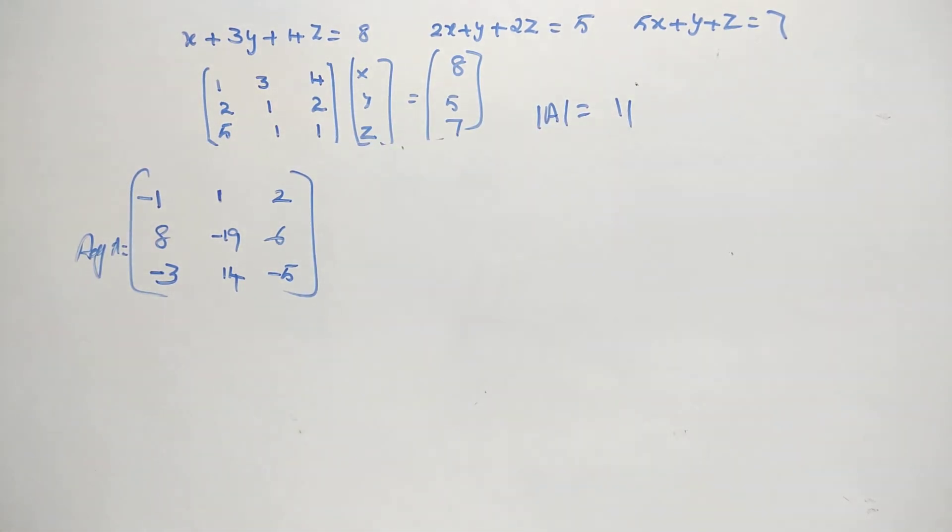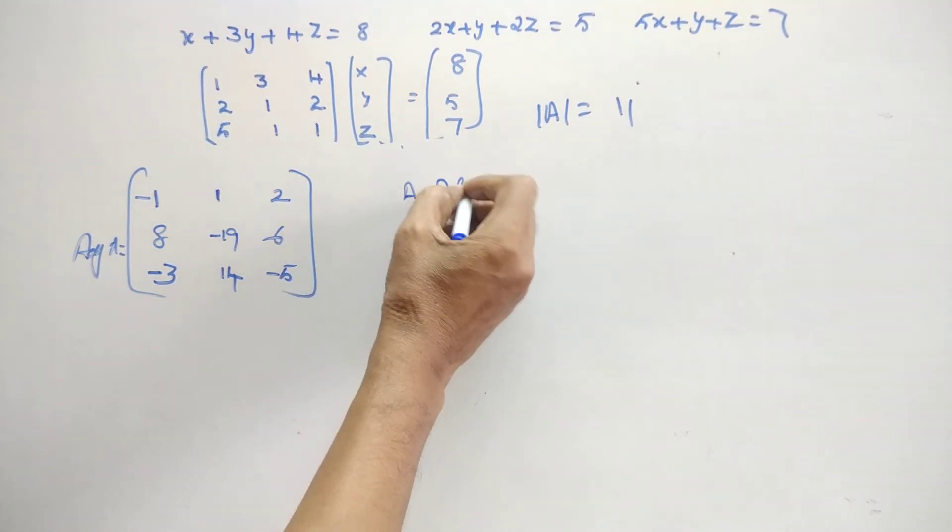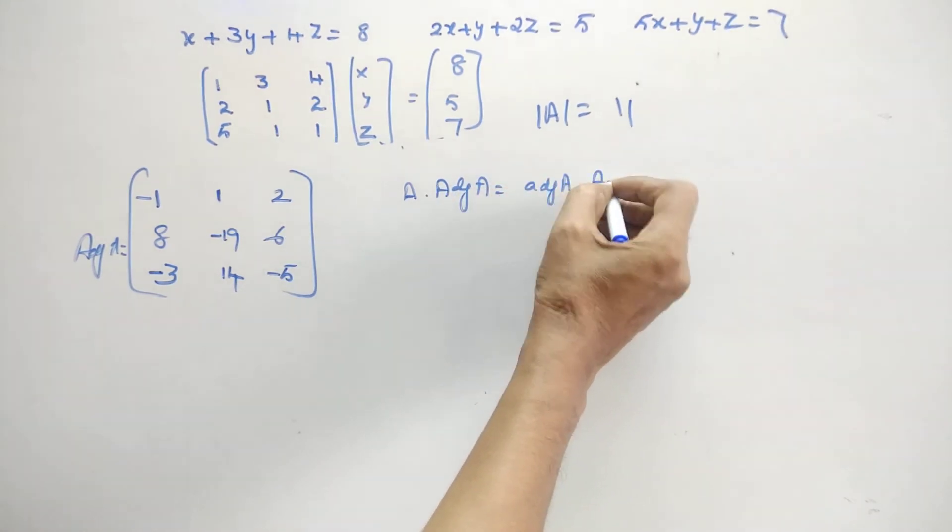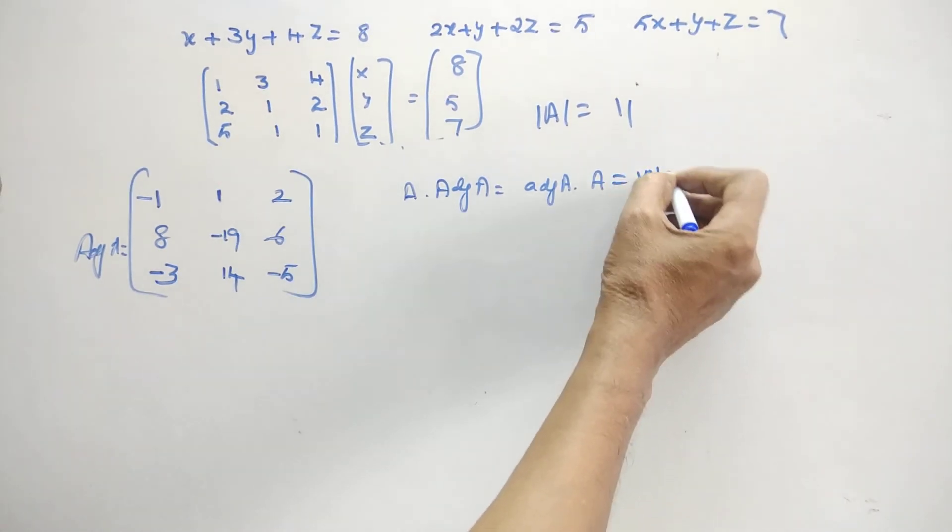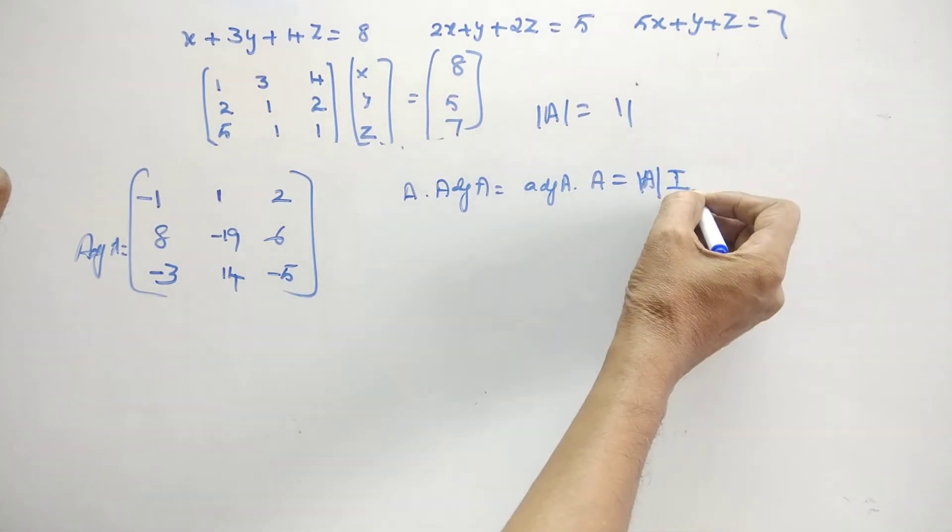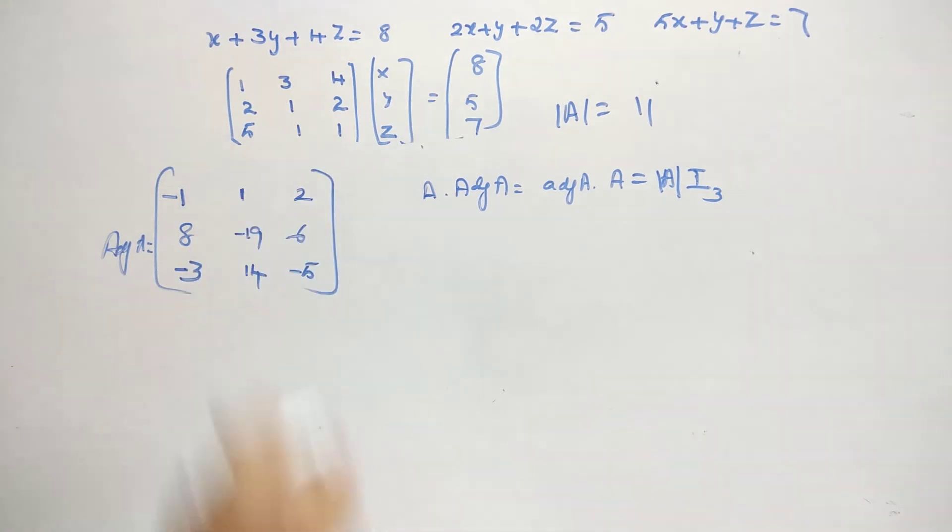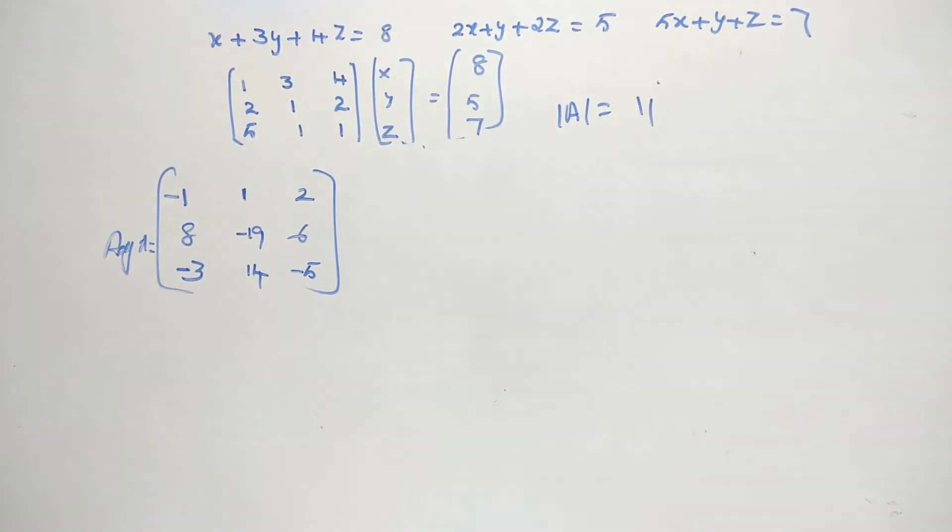Now again the question comes, okay, adjoint matrix you are saying, is it correct? How to verify that? Yes, that's the question. So you know one property. That is, A into adjoint of A equal to adjoint of A into A equal to determinant of A times I. Here A is 3 by 3, so it should be I3. This you know, isn't it? So if this adjoint of A, if I multiply with A and I get this one, then I am correct. So let me see that there. So write the matrix.